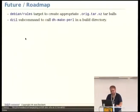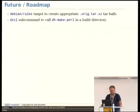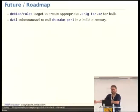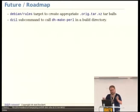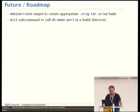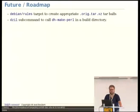Back to the slides. Another nice thing would be to have a dsil sub-command which just calls DH Make Perl in the right directory, copies back the Debian directory, and just does the right thing without having to do too much deterministic work manually.